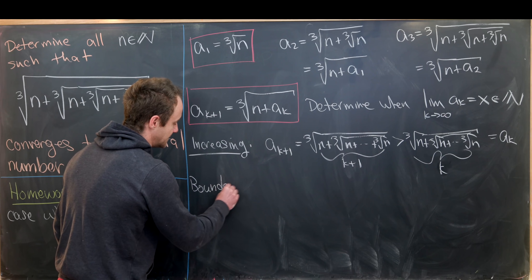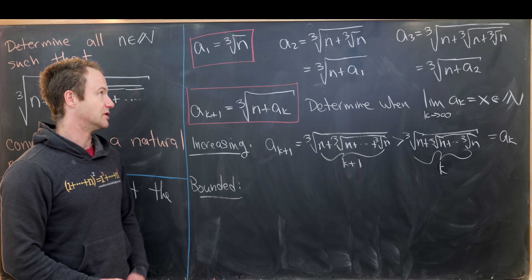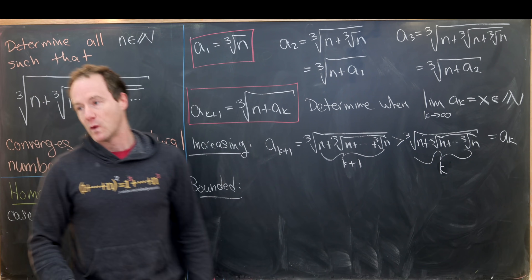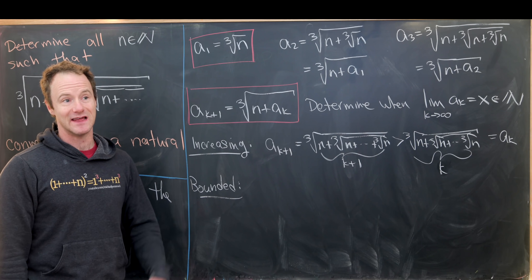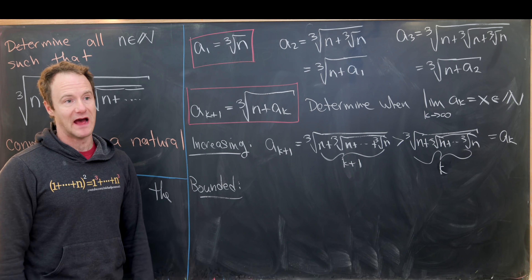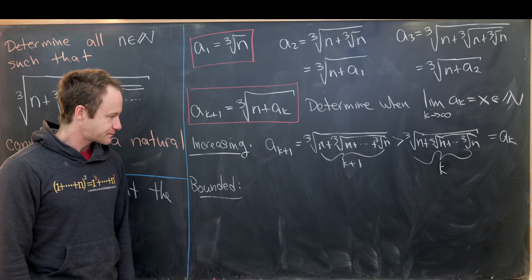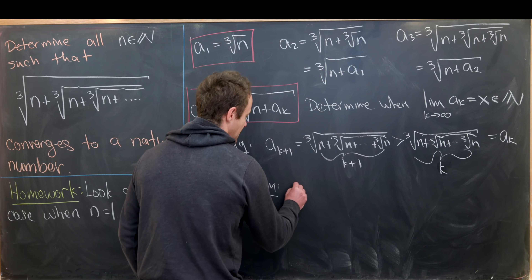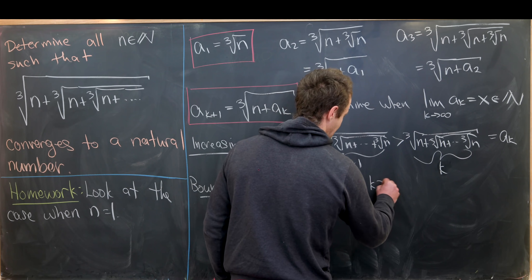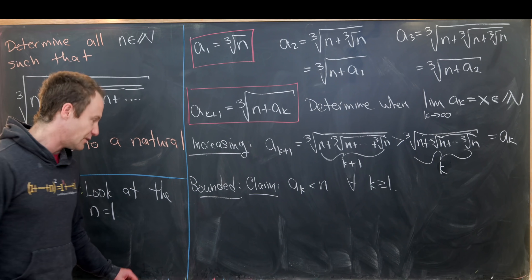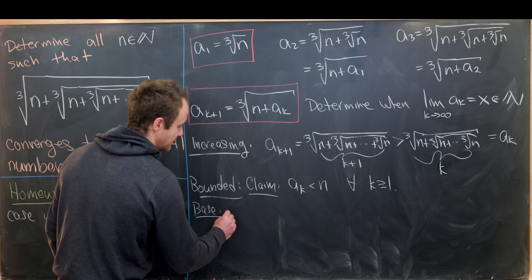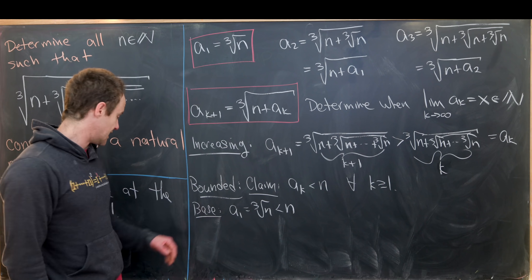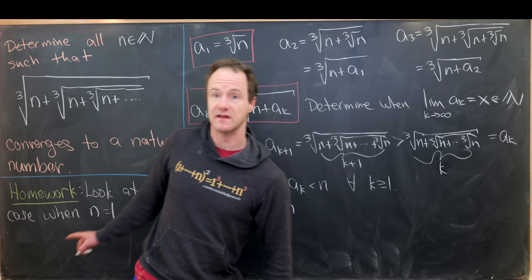Now we need to show the sequence is bounded. Since it's increasing, we need to show it's bounded above — it's already bounded below by the first term. Since we've excluded n = 1, we can use n itself as a loose upper bound. Our claim is that aₖ < n for all k ≥ 1, which we prove by induction. The base case is that a₁ = ∛n < n, which holds because n > 1 and the cube root function is less than the identity in that region.